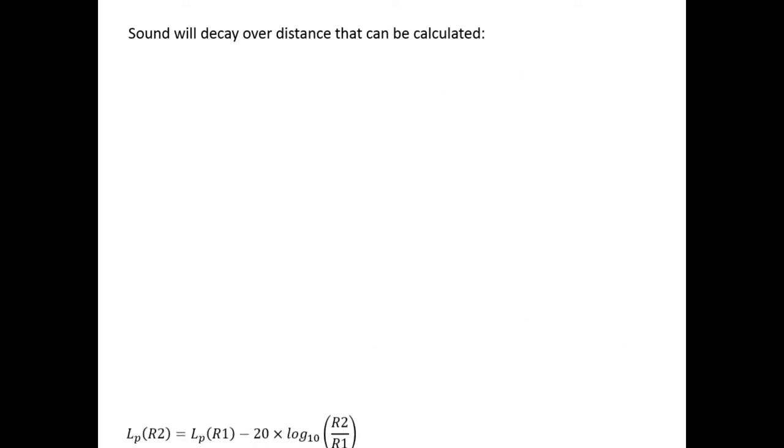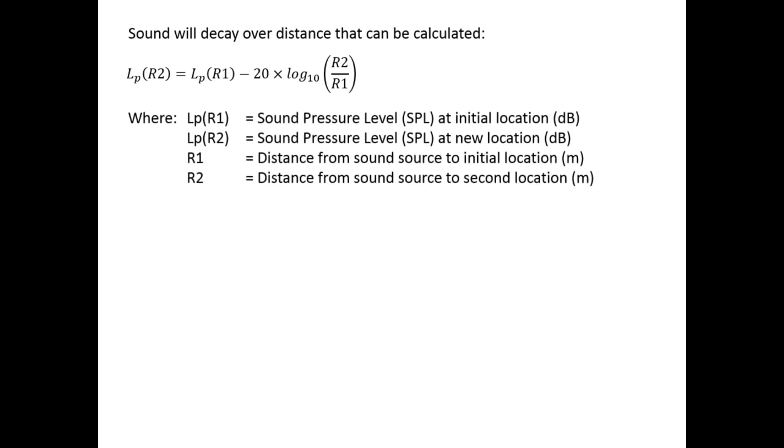Using the formula that you can see on screen right now, we can calculate how much a sound will decay over a certain distance. In this formula, there is an initial position and a secondary position, or position number two. The initial position is usually about one meter away from the origin of the sound. Using this formula, we can then calculate how much the secondary position sound pressure level will be.